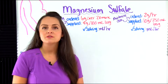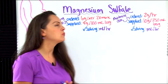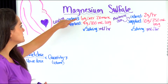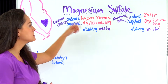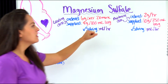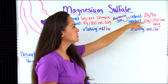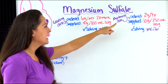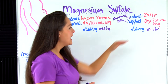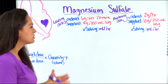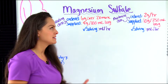For this problem, we have a patient ordered IV magnesium sulfate for eclampsia. The healthcare provider first wants a loading dose of six grams over 20 minutes — you're supplied with a bag that reads four grams per 100 mLs. Then they want a maintenance dose infusion of two grams per hour, supplied with a bag that reads 10 grams per 250 mLs. For both, we're solving for milliliters per hour, so we need two answers.